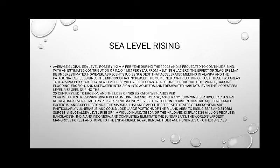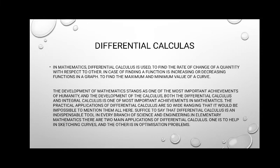The 20th century rise led to erosion and the loss of 100 km² of wetlands per year in the USA's Mississippi River Delta and in Trinidad and Tobago. In many low-lying islands, beaches are retreating several meters per year and salinity levels are rising in coastal areas. Small Pacific islands such as Tonga, the Marshall Islands, and the Federated States of Micronesia are particularly vulnerable and could lose large portions of their land area to rising seas. A global sea level rise of 1 m would inundate 80% of the Maldives, displace 24 million people in Bangladesh, India, and Indonesia, and completely eliminate the Sundarbans — the world's largest mangrove forest and home to the royal Bengal tiger and hundreds of other species.